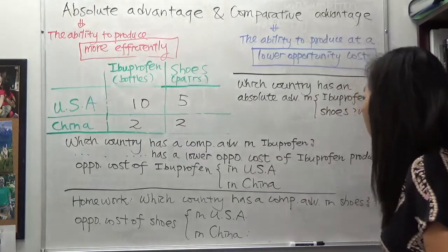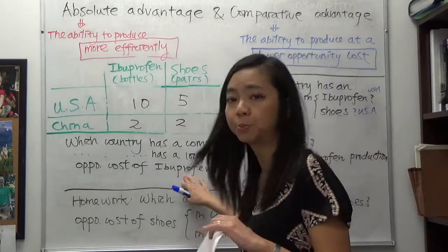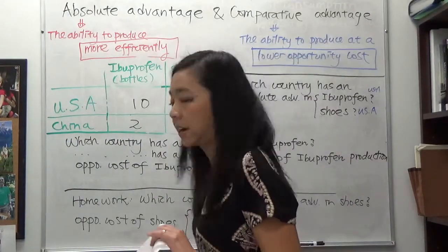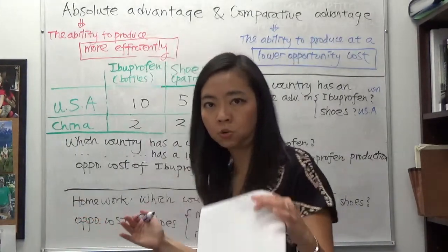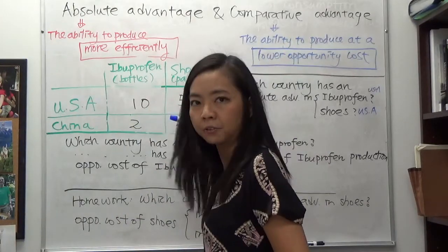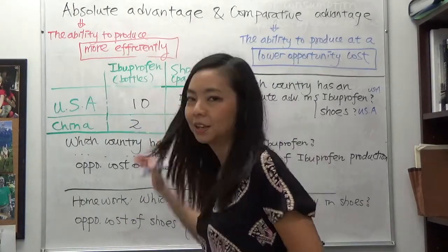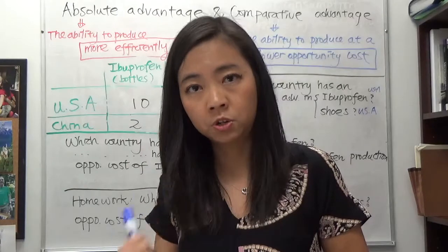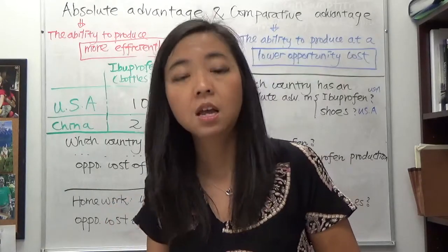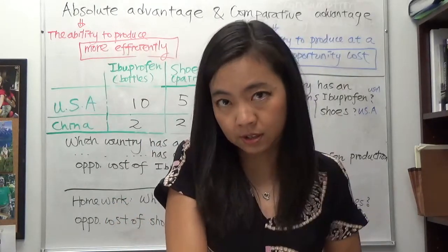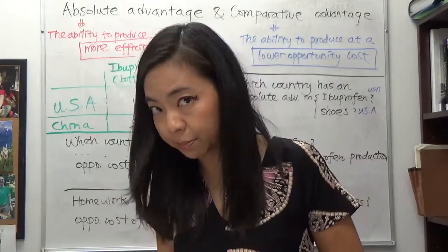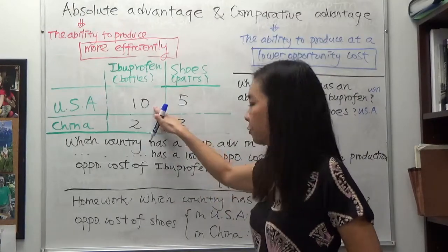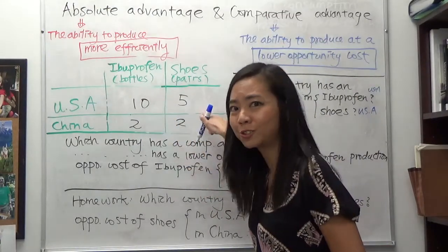What is the opportunity cost of a bottle of ibuprofen in terms of shoes in the US? Most students find it challenging because they don't know whether to divide 10 by 5 or 5 by 10. Here's the key: if you have two goods, A and B, and you're trying to calculate the opportunity cost of good A, then you treat good B as a currency. We're trying to calculate the opportunity cost of ibuprofen, so we treat shoes as currency.